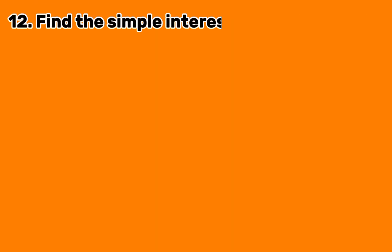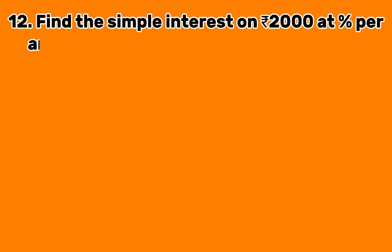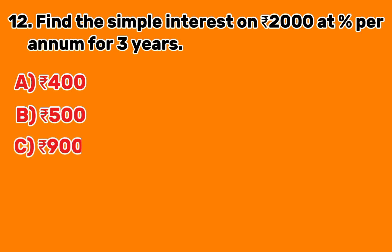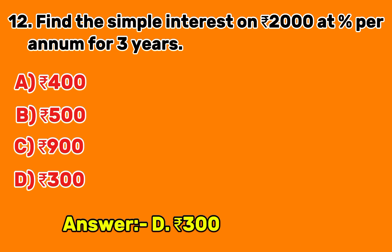Question 12: Find the simple interest on 2,000 Indian rupees at percent per annum for 3 years. A. 400 Indian rupees. B. 500 Indian rupees. C. 900 Indian rupees. D. 300 Indian rupees. Answer D: 300 Indian rupees.